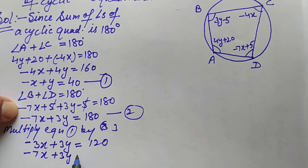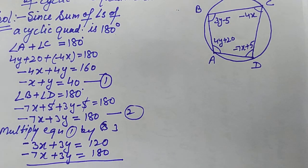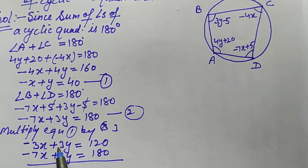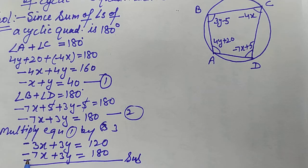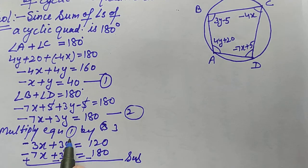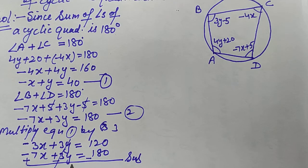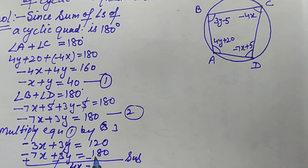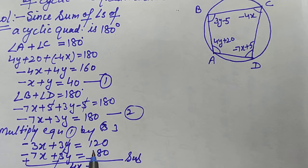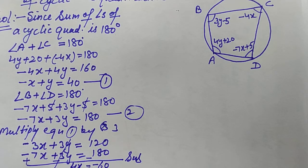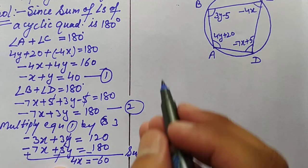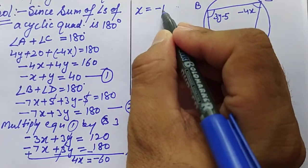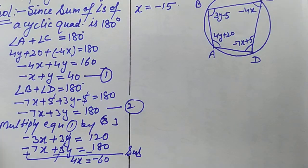Since the coefficients of y have the same sign, we subtract the two equations. Signs change on subtraction: −3x minus (−7x) gives +4x, and 120 − 180 = −60. So 4x = −60, which gives x = −15.